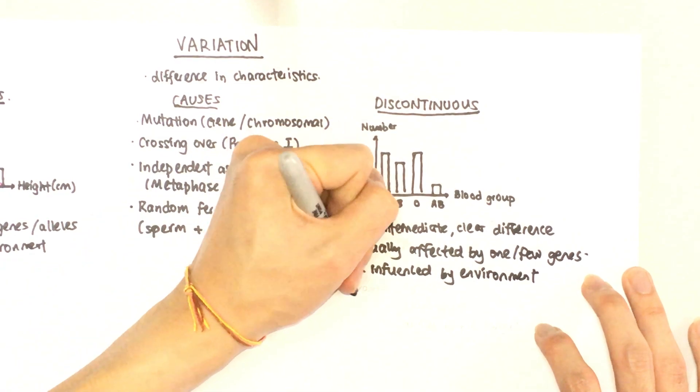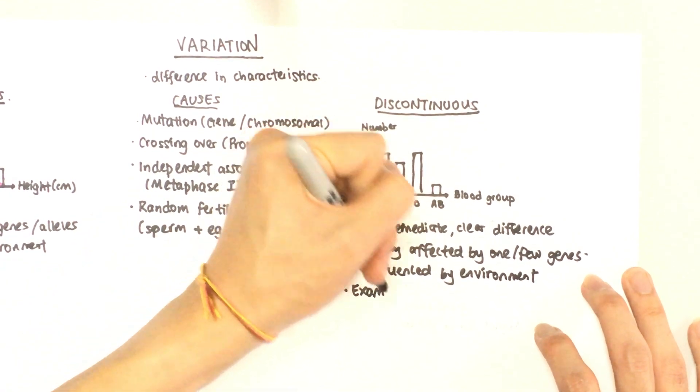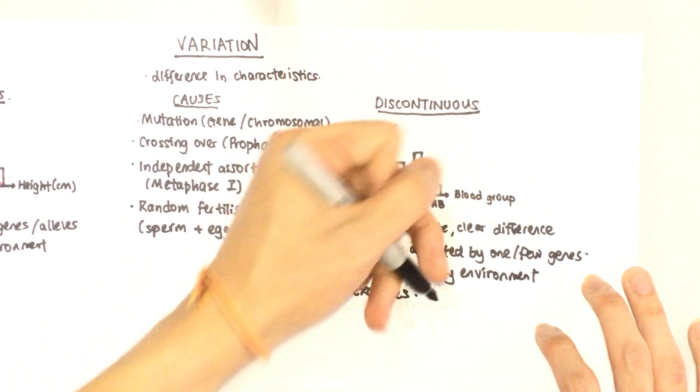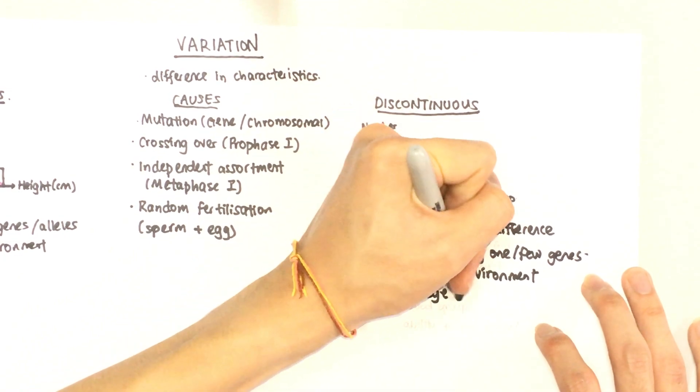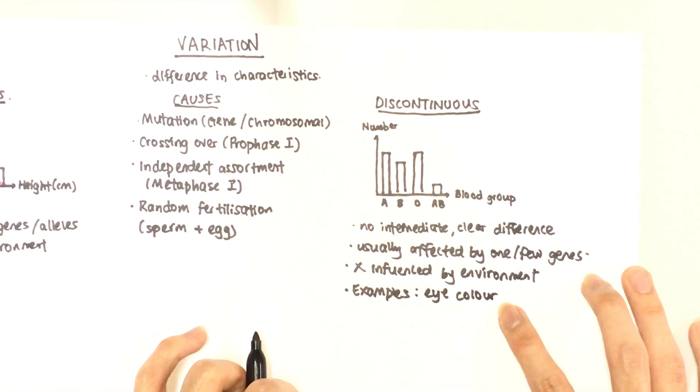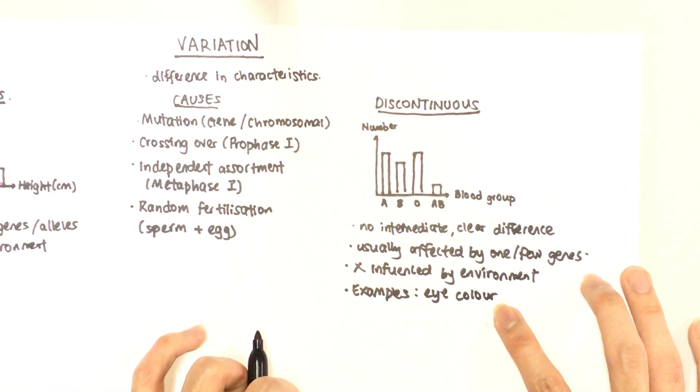Some examples of characteristics which are discontinuous variation would be eye color. Now, eye color, obviously, you cannot change your natural eye color. Contact lenses is artificial, so we don't include that.